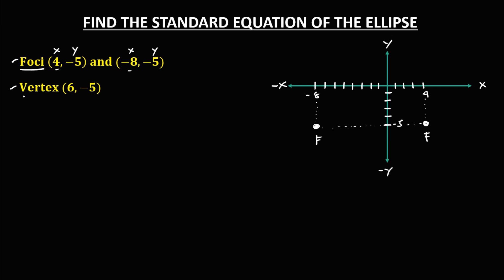So y negative 5. This is now the other point of the foci. Then for the coordinate of vertex, x is positive 6 and y is negative 5. So this is now the point for the vertex. Observe that on this graph, the foci are in horizontal position, so this ellipse is a horizontal ellipse.